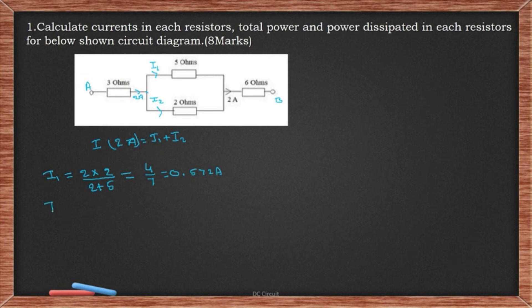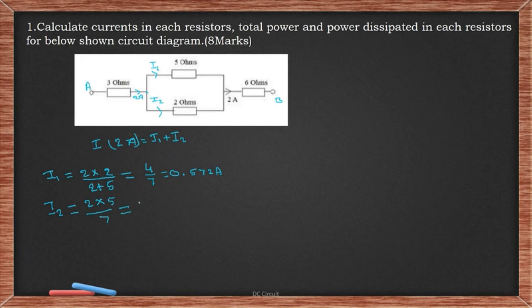Similarly, I2 = 2 × 5/(2 + 5) = 10/7 = 1.428 A.